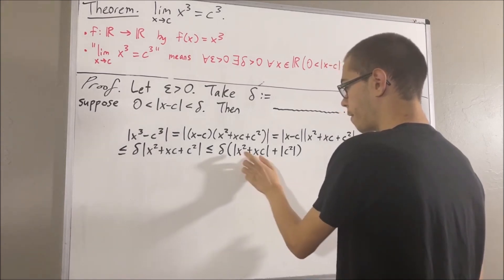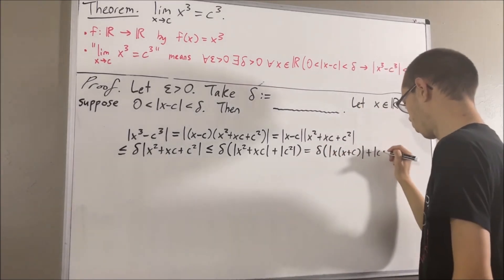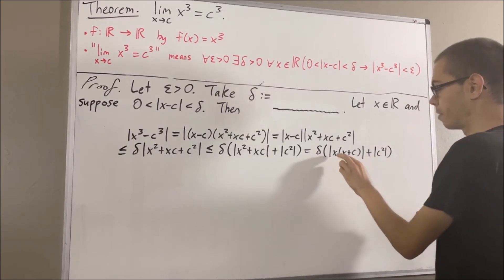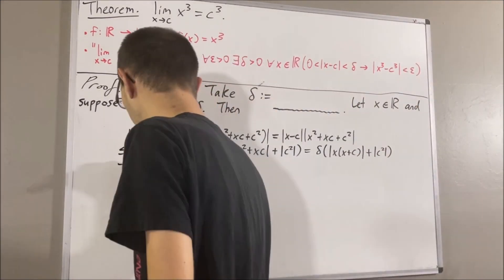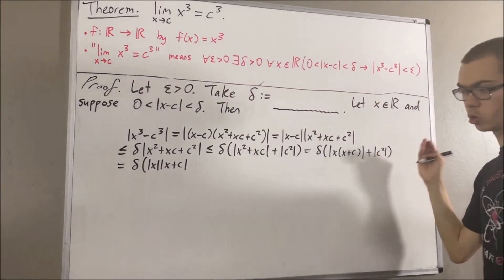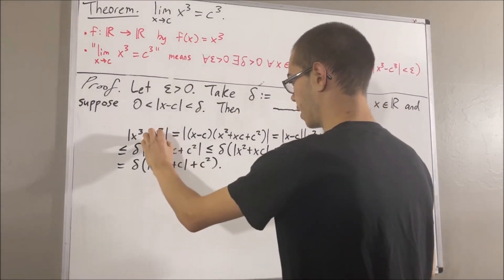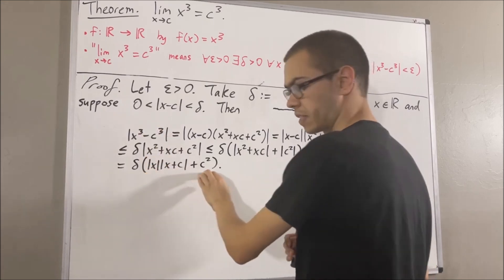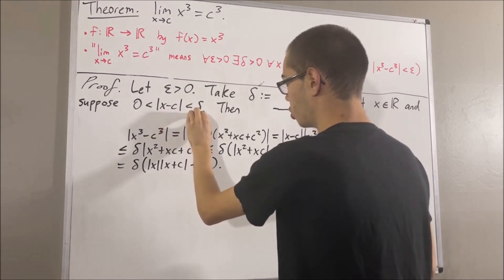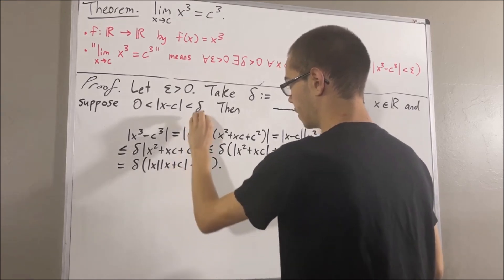Let's take what we have here and factor out an x. We can split this into the absolute value of x times the absolute value of x plus c. And the absolute value of c squared is equal to c squared. We've re-expressed this because we can use this inequality to bring the absolute value of x in terms of delta and the absolute value of x plus c in terms of delta.